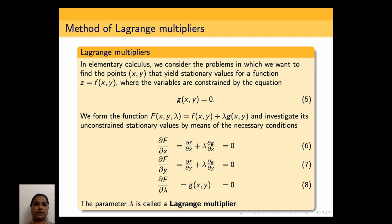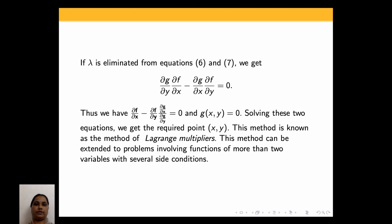If we eliminate λ from the first two equations — multiplying the first by ∂g/∂y and the second by ∂g/∂x and subtracting — we get ∂g/∂y · ∂f/∂x minus ∂g/∂x · ∂f/∂y equal to 0, along with g(x, y) equal to 0. Solving these two equations gives the required point (x, y). This method is known as the method of Lagrange multipliers, and it can be extended to problems involving functions of more than two variables with several side conditions.